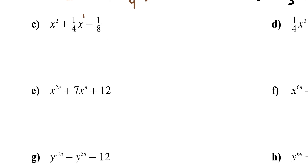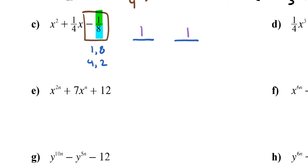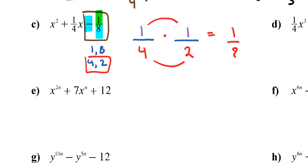For letter C, the last fraction is negative 1/8. I need two numbers that multiply to 1, which is 1 and 1, and two numbers that multiply to 8: either 1 and 8, or 4 and 2. There's also a minus sign to work with. Putting 4 here and 2 there: 1 times 1 is 1, and 4 times 2 is 8, and I just need a minus sign on one of the fractions.